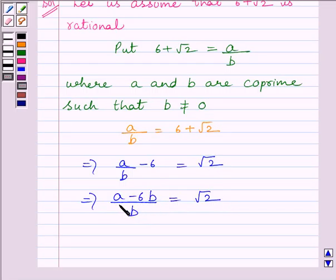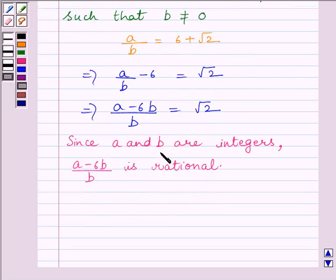Since A and B are integers, A minus 6B upon B must be rational. Now A minus 6B upon B is equal to root 2, so this implies root 2 is rational.